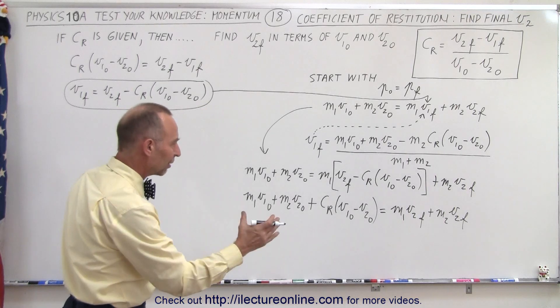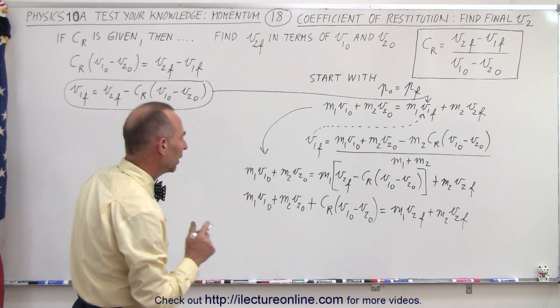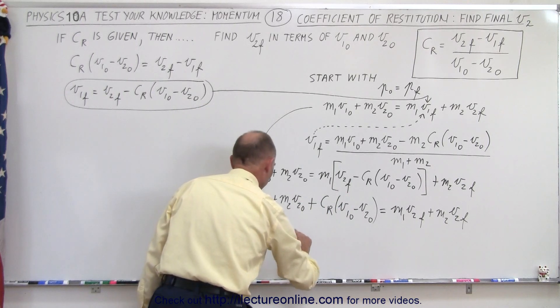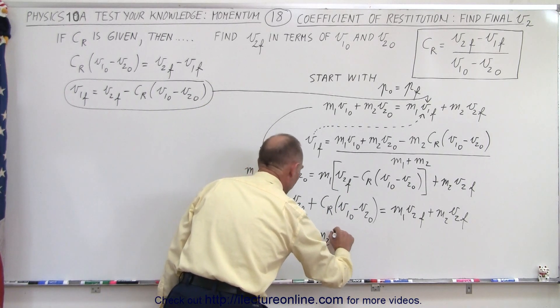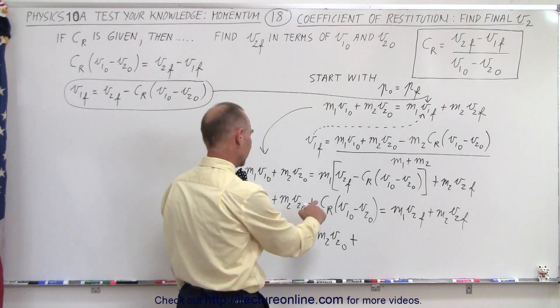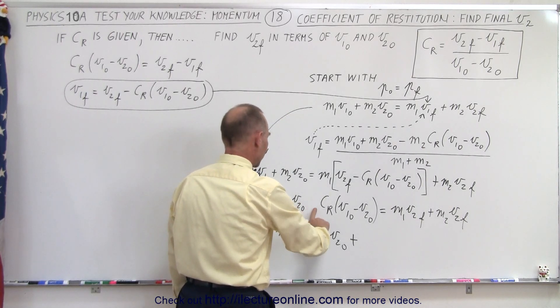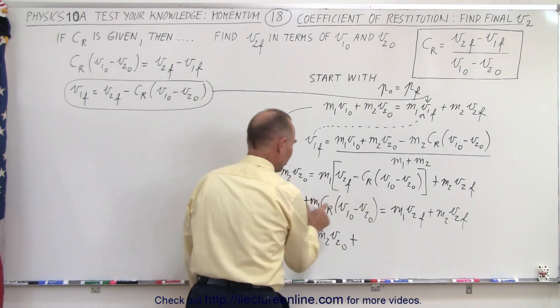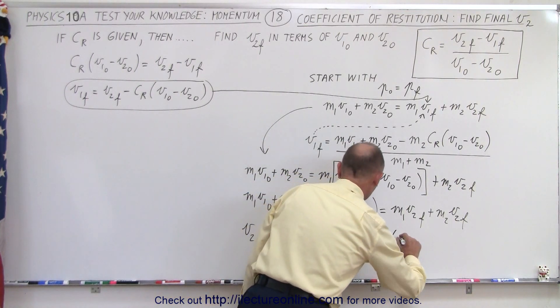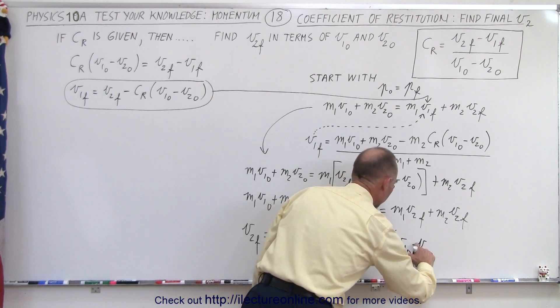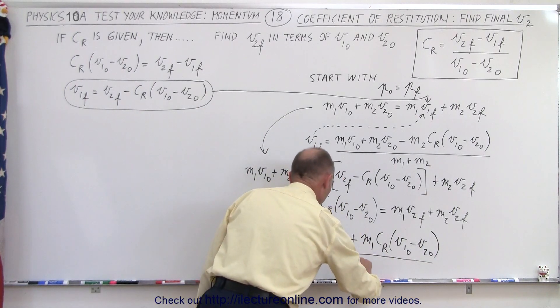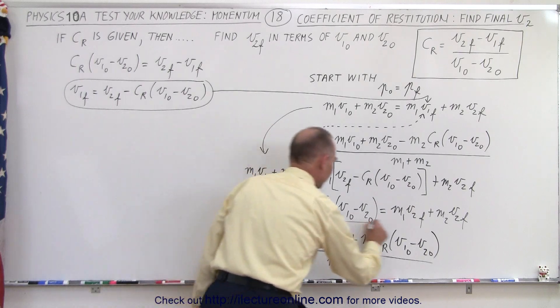And then we can factor out a V2 final, divide both sides by M1 plus M2. And notice we have done the following. V2 final is equal to the left side equation which is M1 V1 initial plus M2 V2 initial plus... I think I'm missing something here. Yes, I forgot something plus M1, because M1 times this moves to the left. So then plus M1 C, the coefficient of restitution, times V1 initial minus V2 initial. Like that. And then the whole thing divided by M1 plus M2. And that will be V2 final.